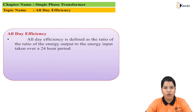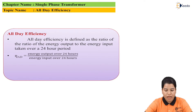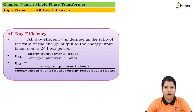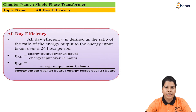We know that input is nothing but output plus losses. Hence this equation can be modified as: all day efficiency of the transformer is given by energy output over 24 hours divided by energy input over 24 hours. This can further be expressed as energy output of the transformer in 24 hours divided by energy output of the transformer in 24 hours plus the total losses of the transformer in 24 hours. In this way we can calculate the energy efficiency or all day efficiency of the transformer, which gives a better performance result for the distribution transformer.